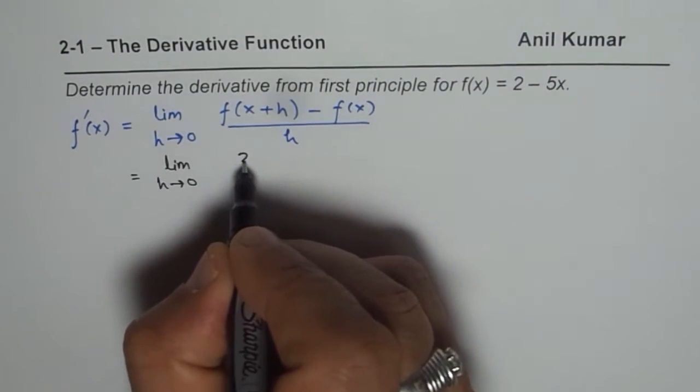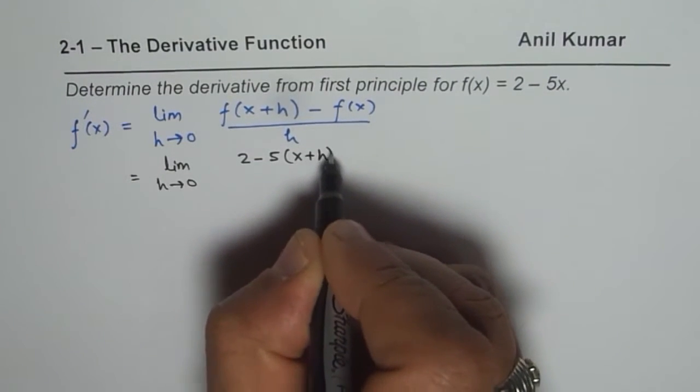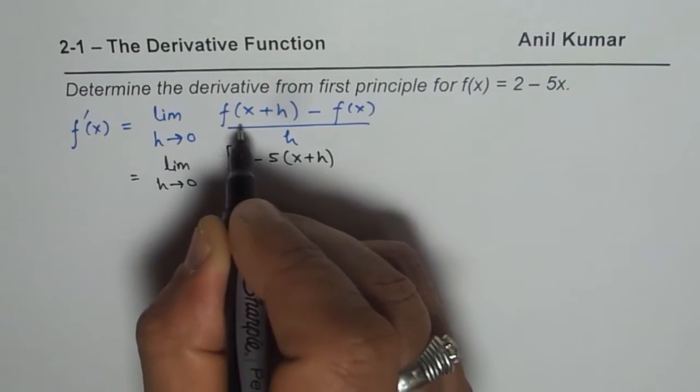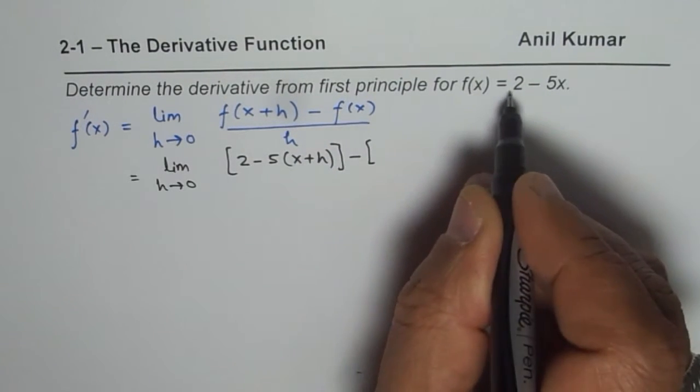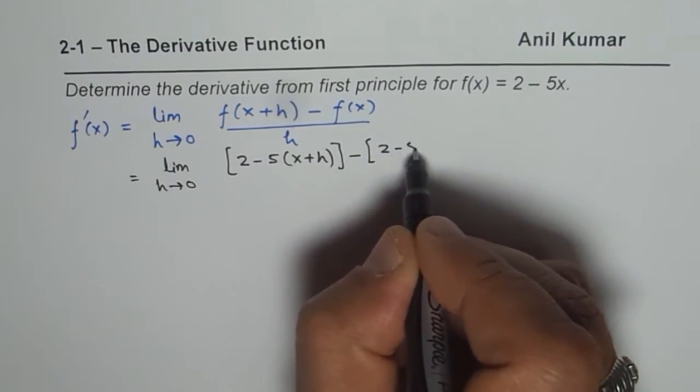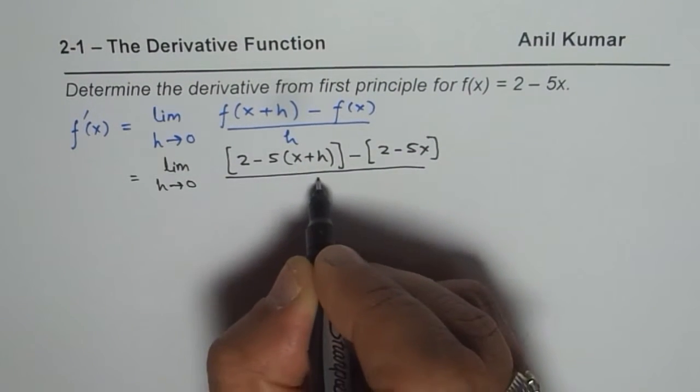So what we get here is 2 minus 5 times x plus h. So that becomes the first term, minus f of x, the function itself, 2 minus 5x, divided by h.